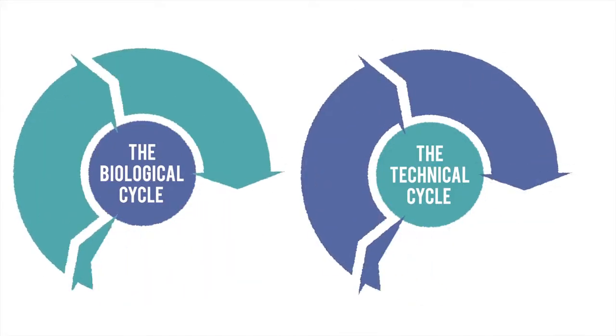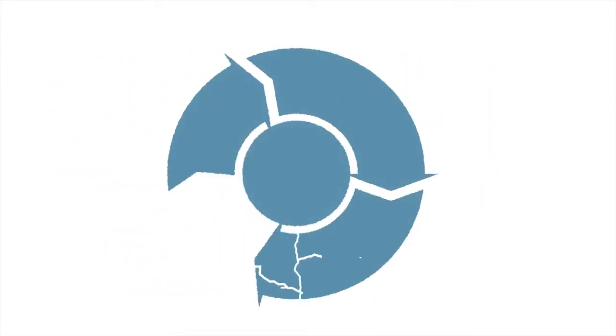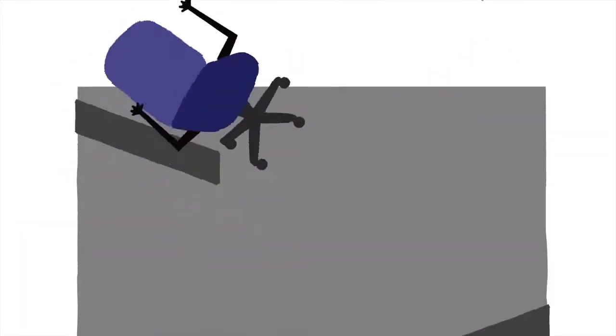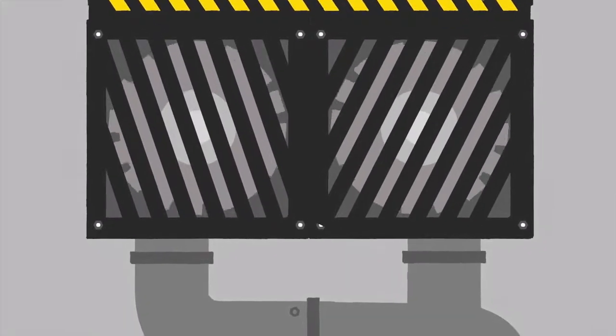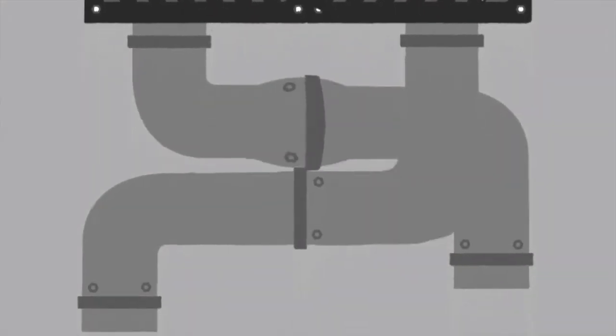Now let's put these two cycles together. Imagine if we could design products to come back to their makers, their technical materials being reused and their biological parts increasing agricultural value.